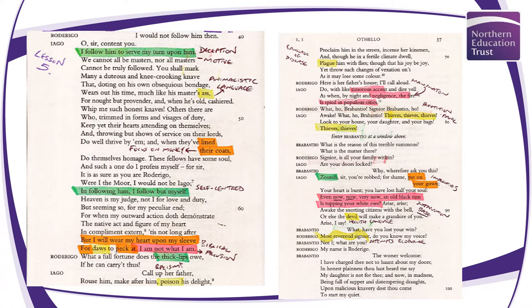Roderigo shouts, 'What ho, Brabantio? Signor Brabantio, ho! Awake. What ho, Brabantio? Thieves, thieves, thieves!' — that repetition used to incite panic. 'Look to your house, your daughter, your bags. Thieves, thieves.' He's insinuating that Brabantio has been robbed — that his daughter has been taken from him. Enters Brabantio from a window above.